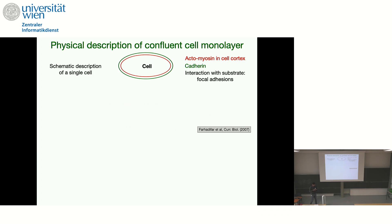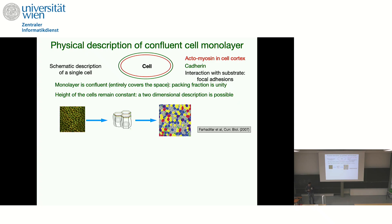Let's start with a simplified physical description of cells. For most practical purposes, the mechanical property of a cell is governed by a thin layer of cytoplasm just below the cell membrane, known as the actomyosin cortex. Cells also interact with each other via adhesion molecules like E-cadherin, tight junctions, and desmosomes, and interact with the substrate via focal adhesion. For this confluent system, two key properties emerge: the cells entirely cover the whole space with packing fraction unity at all times, and the cell height remains nearly constant, allowing a two-dimensional description.